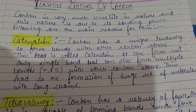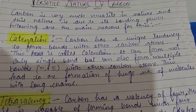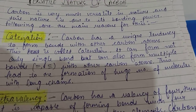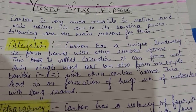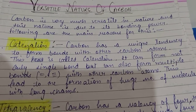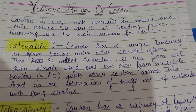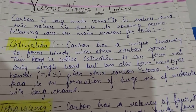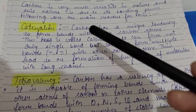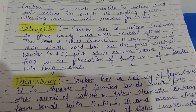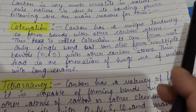Next, let us discuss the versatile nature of carbon — how carbon is available in such large quantities in nature. You will be surprised to know that carbon has formed about three million, or even more, compounds. Two major properties make carbon's bonding different from others: one is catenation and the other is tetravalency. Let us understand these two terms properly. Catenation: carbon has a unique tendency to form bonds with other carbon atoms.